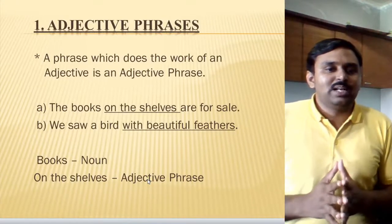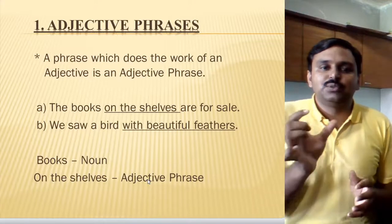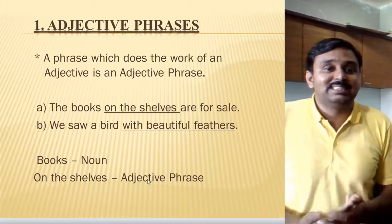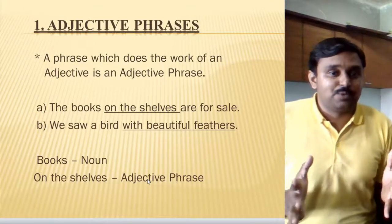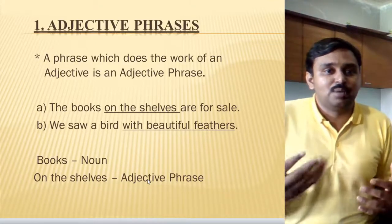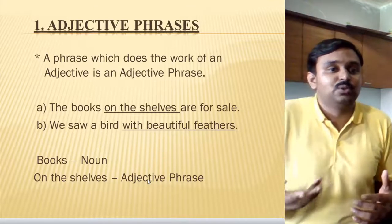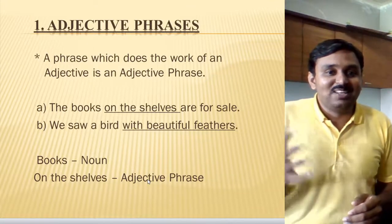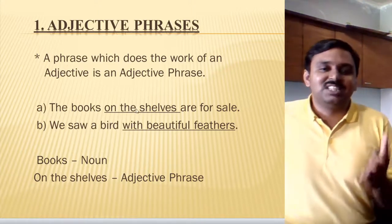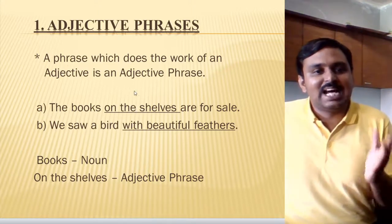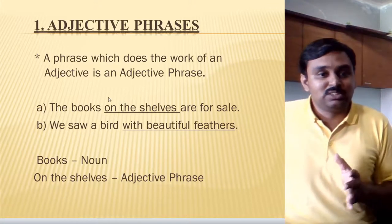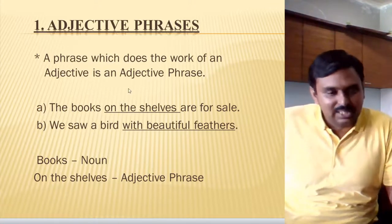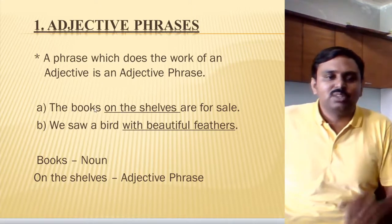Now if we look at the adjective phrase — if we look at the word adjective first — we know very commonly that the adjective is a word that qualifies a noun. So a phrase which does the work of an adjective is an adjective phrase. Suppose if there is a phrase and that phrase is describing the noun, it is called an adjective phrase. Now we have some examples here.